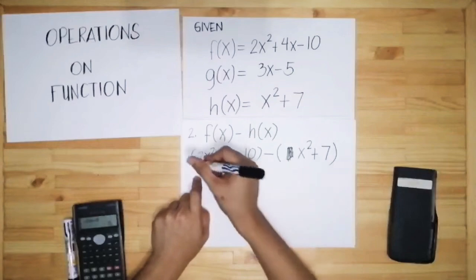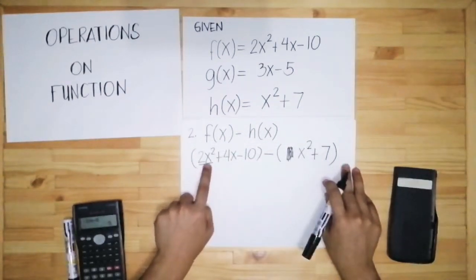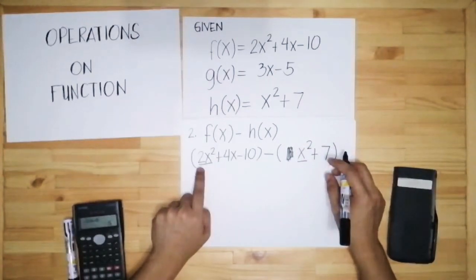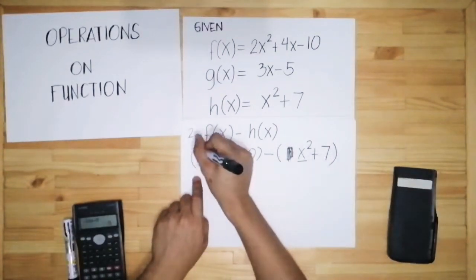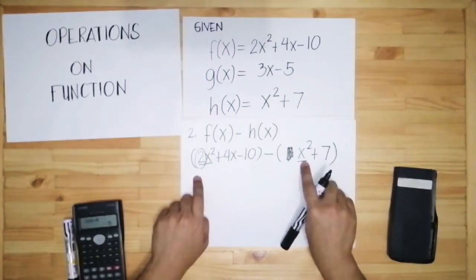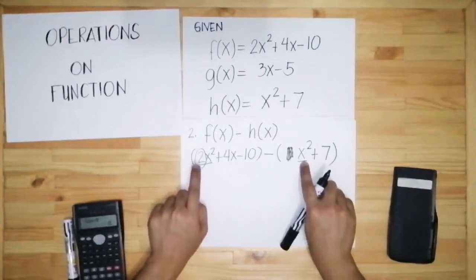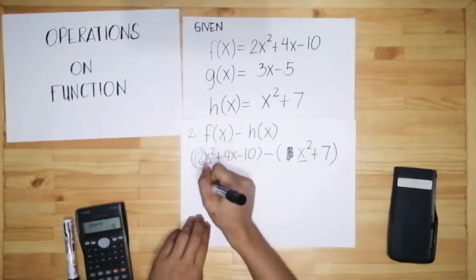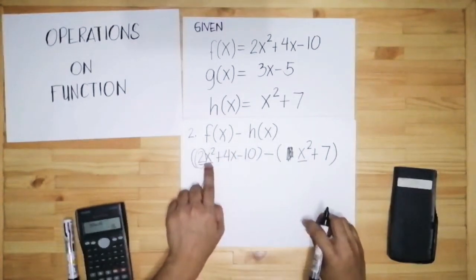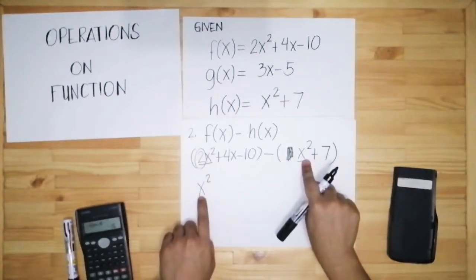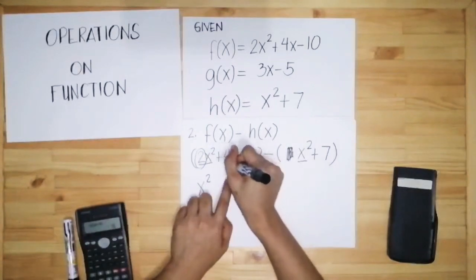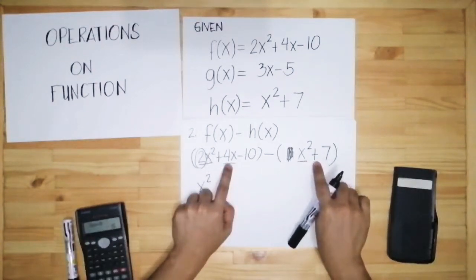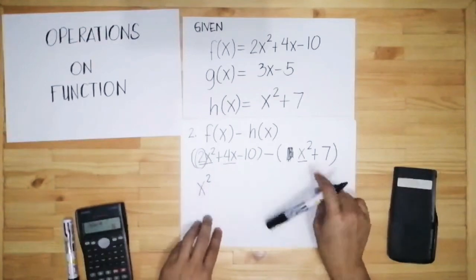Similar terms must still match. For 2x squared, is there a matching x squared term on the other side? Yes, x squared. You subtract their numerical coefficients: 2 minus 1 equals 1, so the result is x squared. Next, we have 4x. On the other side there is no term with just x, so there is nothing to combine with 4x — we just copy it: 4x.